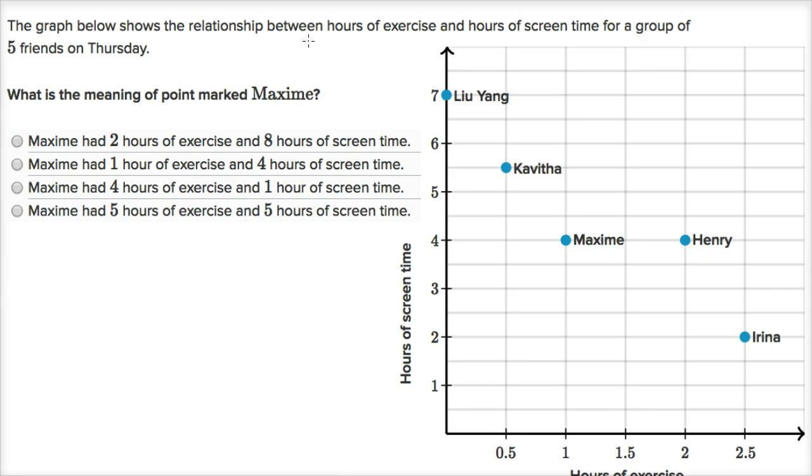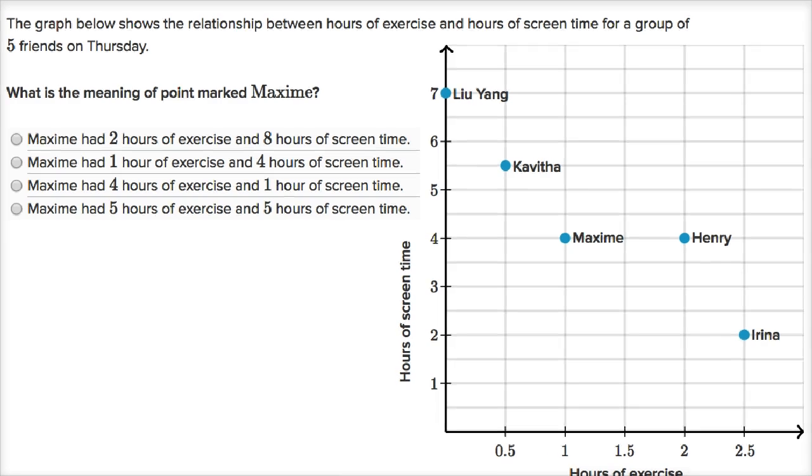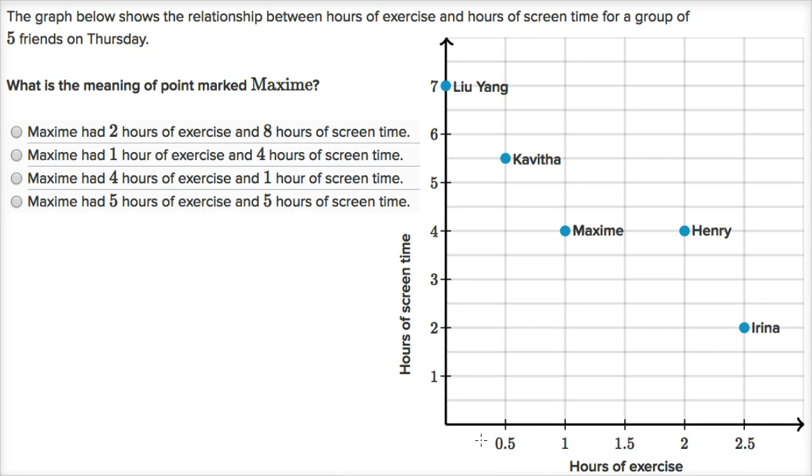The graph below shows the relationship between hours of exercise and hours of screen time for a group of five friends on Thursday. If we look over here, we can see that here on this horizontal axis, when we're going from left to right, it says hours of exercise.